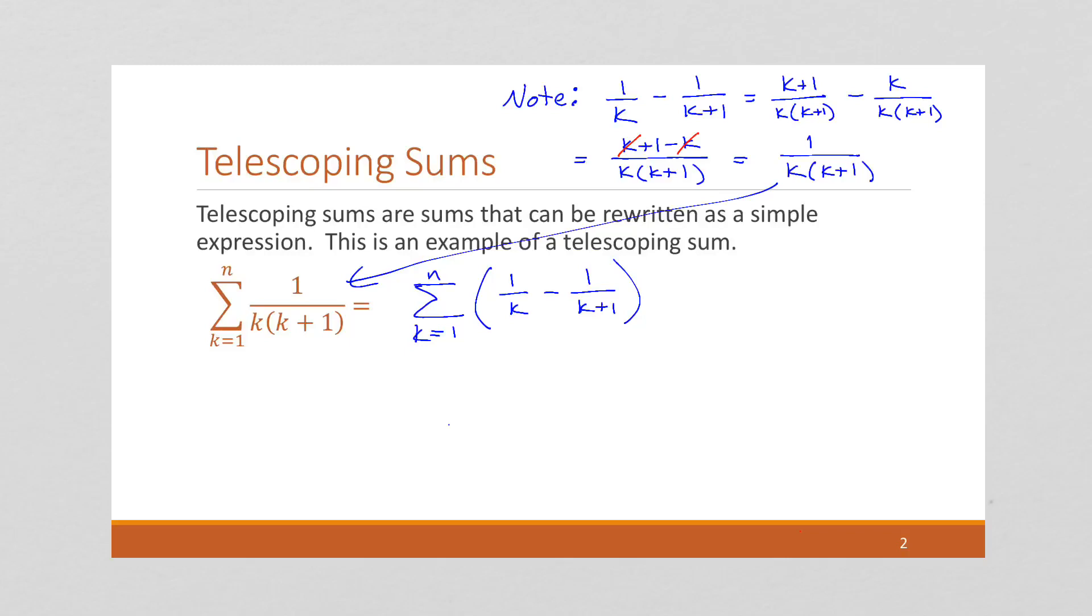Okay, so with this, I'm now going to expand, and I'm going to get k starts at 1, so this is 1 over 1 minus 1 over 2, 1 plus 1. And then we're going to have 1 over 2 minus 1 over 3, let's do one more, 1 over 3 minus 1 over 4. And now let's do the last two terms.